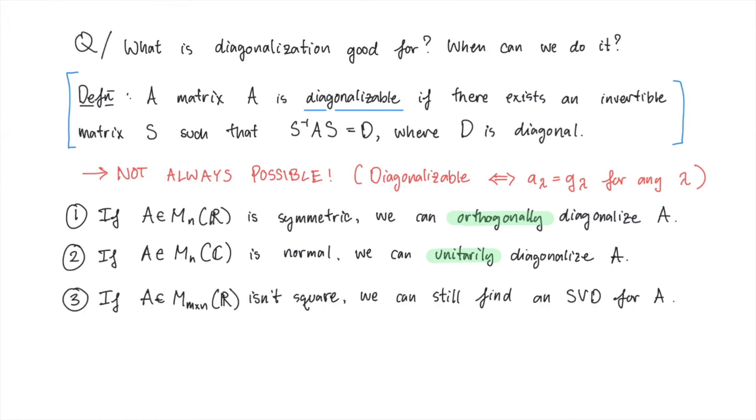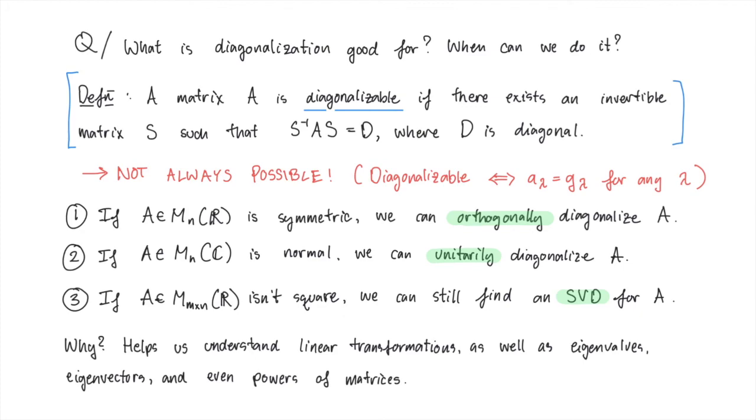Lastly, if the matrix A isn't square, then we can't diagonalize it, strictly speaking. However, we do have the next best thing, which is the singular value decomposition. It's like diagonalization, but because A isn't square, the matrices on either side of A don't have the same size. You should really think about this as an analog of diagonalization.